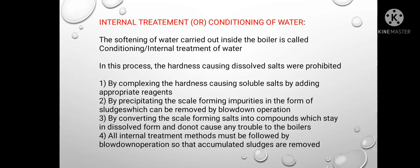Now we will see internal treatment, also known as conditioning of water. The softening of water carried out inside the boiler is called conditioning or internal treatment of water. In this process, the hardness-causing dissolved salts are controlled: first, by complexing the hardness-causing soluble salts by adding an appropriate reagent; second, by precipitating the scale-forming impurities as sludges which can be removed by blow-down operation; third, by converting scale-forming compounds into compounds that stay in dissolved form and do not cause any trouble to the boilers.